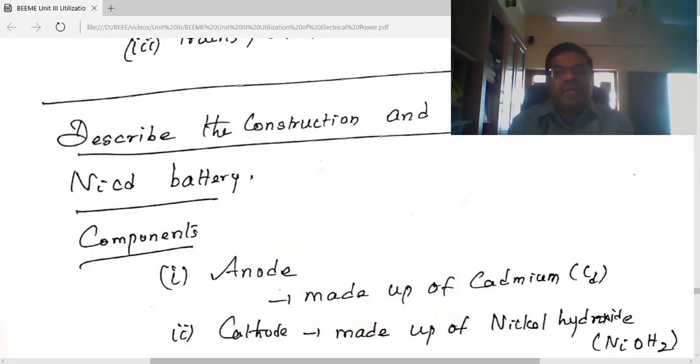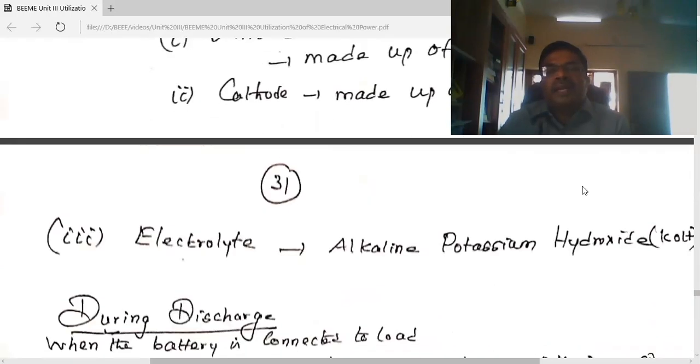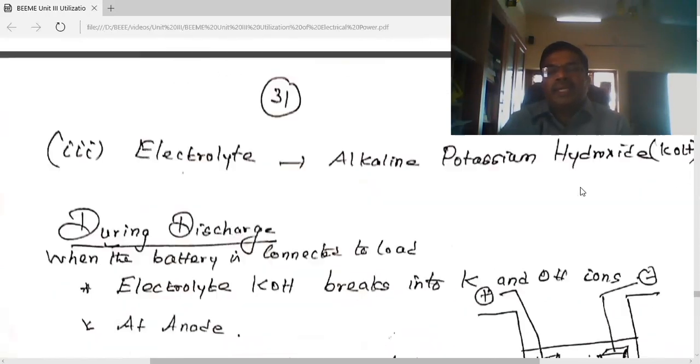In nickel-cadmium battery, anode is made up of cadmium, cathode is made up of nickel hydroxide, and the electrolyte is alkaline potassium hydroxide.